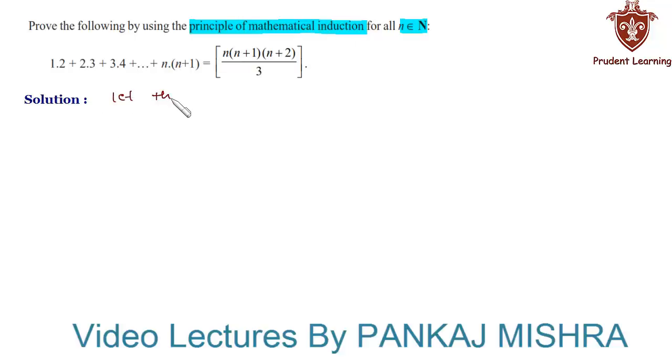Let the given statement be P(n) such that 1·2 + 2·3 + 3·4 and so on up to n(n+1) equals n(n+1)(n+2)/3.